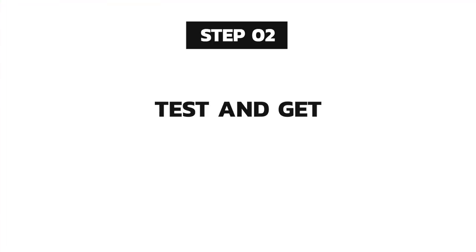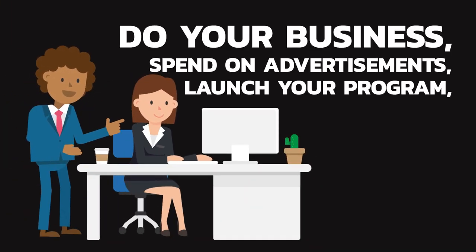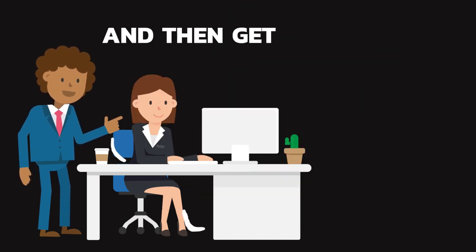Step number two: test and get actual data. Now it's time to get actual data. Do your business, spend on advertisement, launch your products or programs, sell your products, then get your actual conversion rates. Check the difference between the industry average versus your actual conversion rates, and then adjust accordingly.